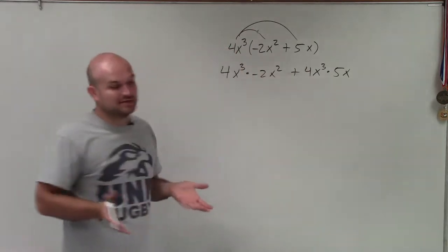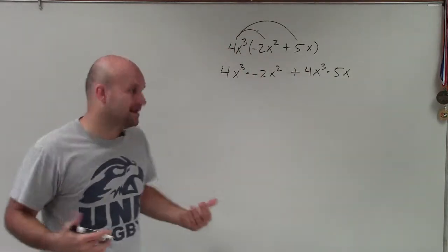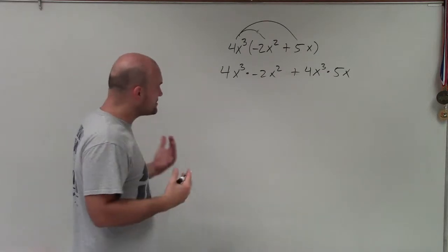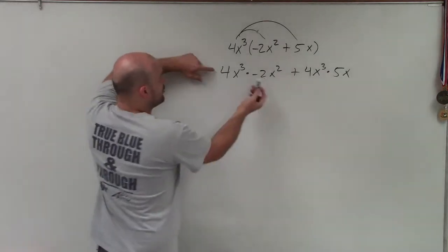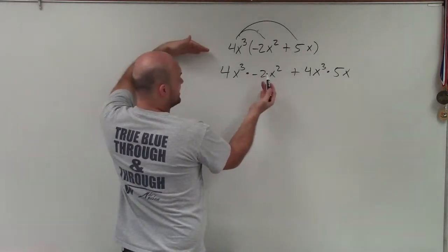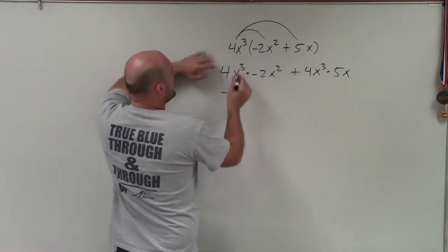So now I just need to make sure I multiply these monomials times these monomials. When you're multiplying monomials, first of all, our coefficients — we can just multiply them like regular numbers. So 4 times negative 2 is negative 8.